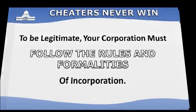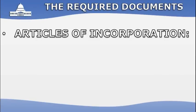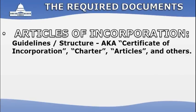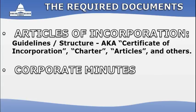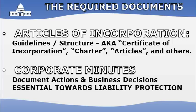At a minimum, you're going to need: Articles of Incorporation — the document filed to form a corporation that sets guidelines for the business purpose and corporate structure, also known as a certificate of incorporation, charter, or articles of association. Corporate Minutes are records that document corporate actions and approve business decisions made by the principals throughout the year, essential for establishing real legal separation between you and your company, thus protecting you from liability.